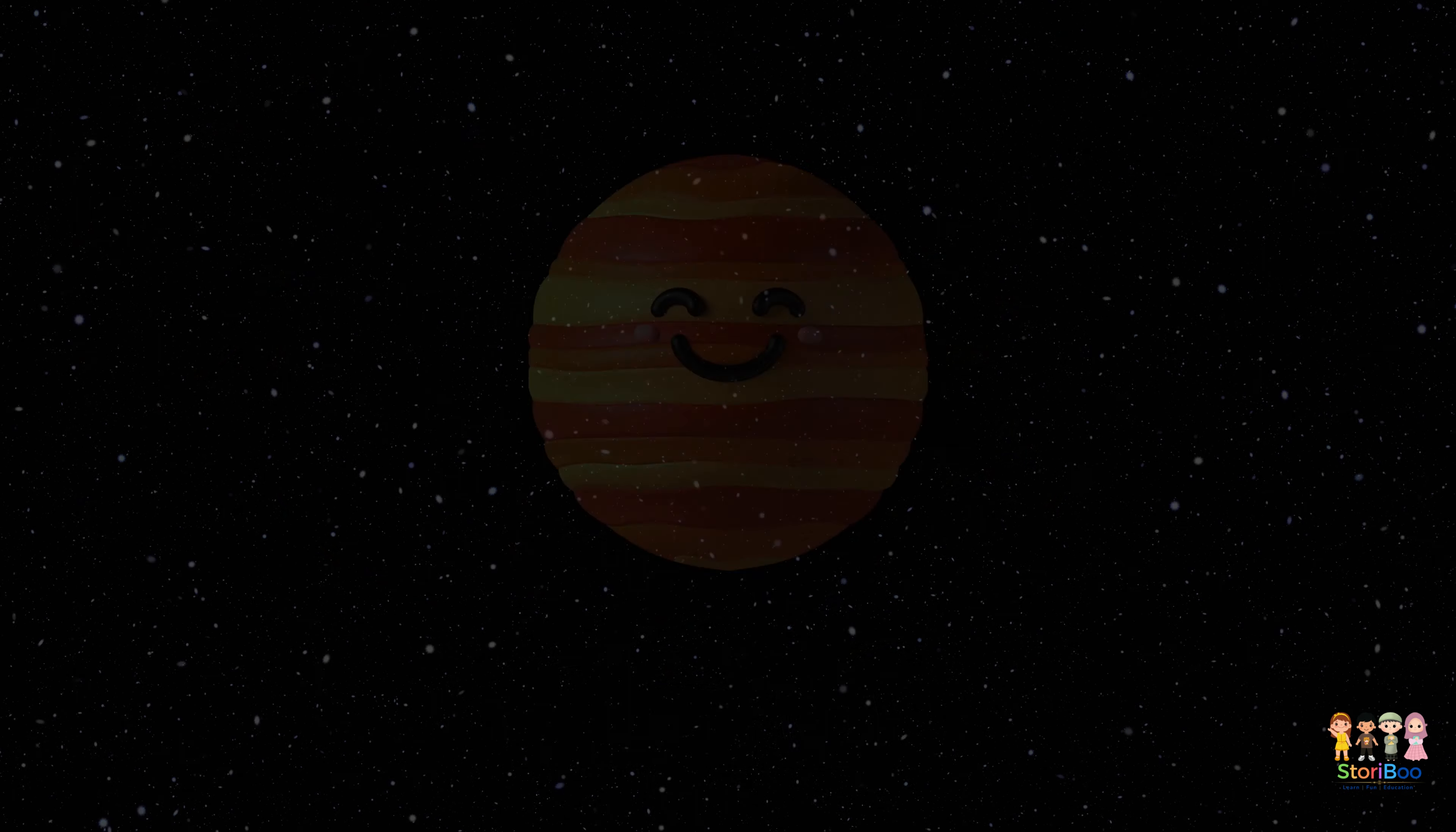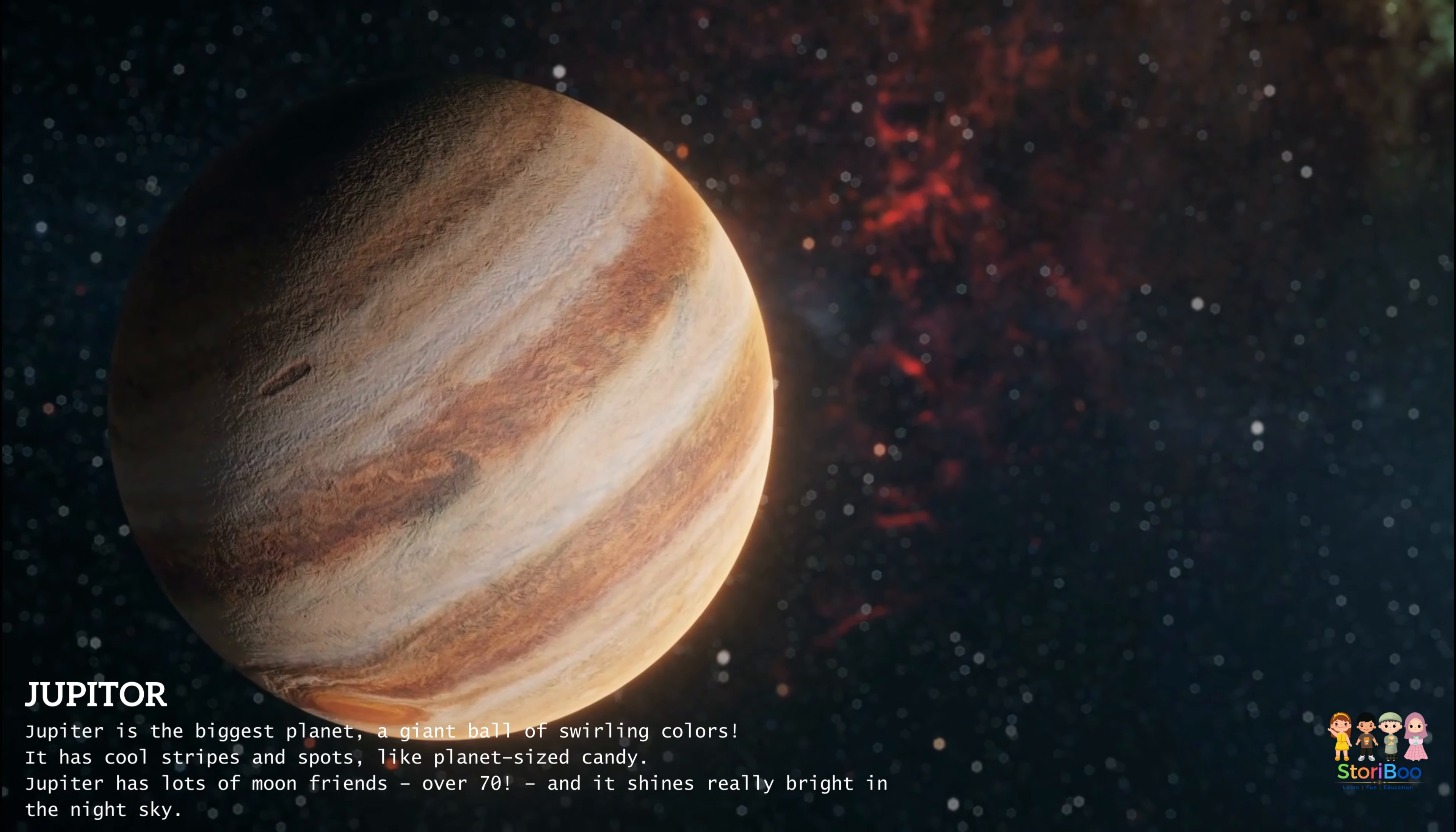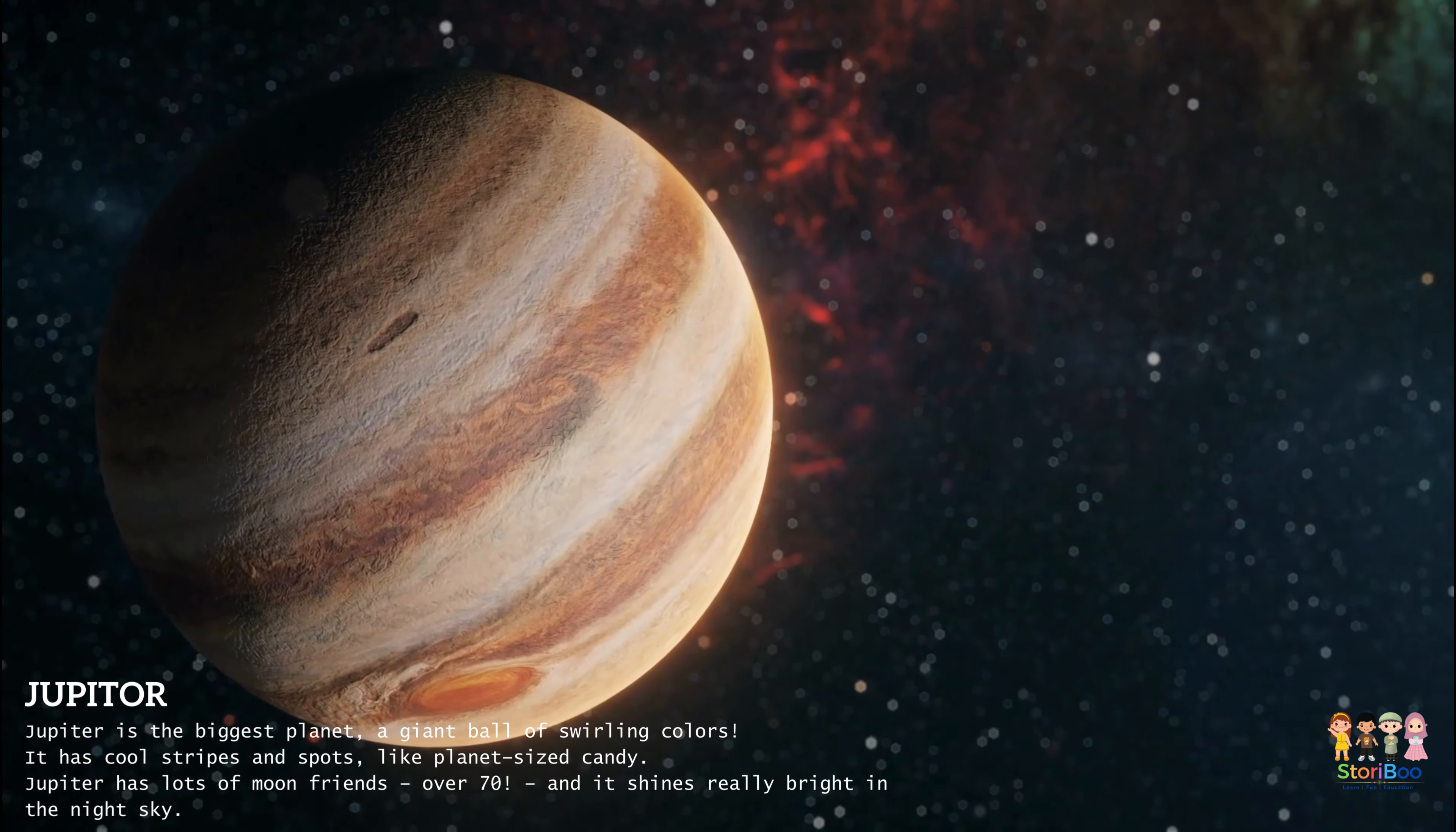Jupiter is the biggest planet, a giant ball of swirling colors. It has cool stripes and spots like a planet-sized candy. Jupiter has lots of moon friends, over 70, and it shines really bright in the night sky.